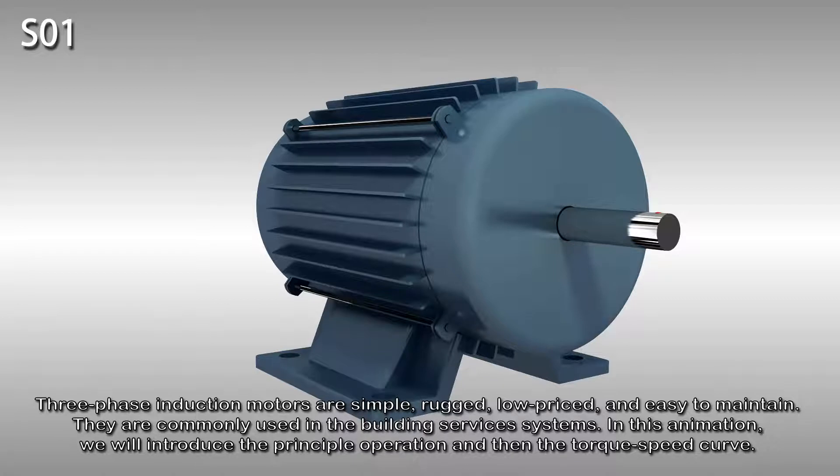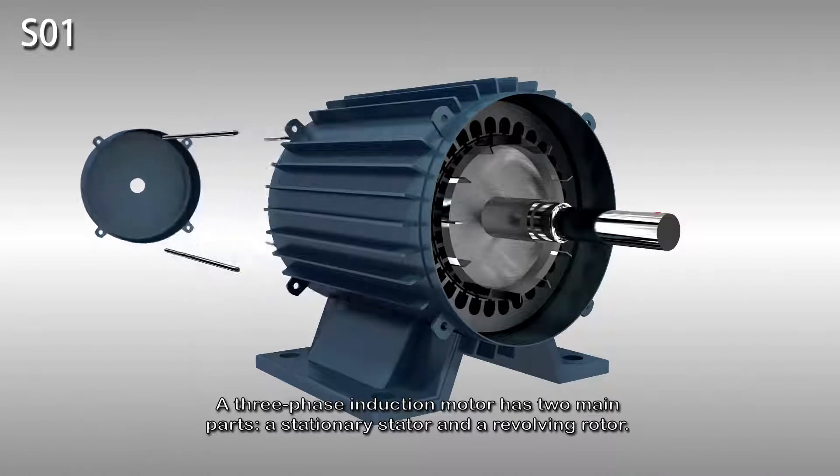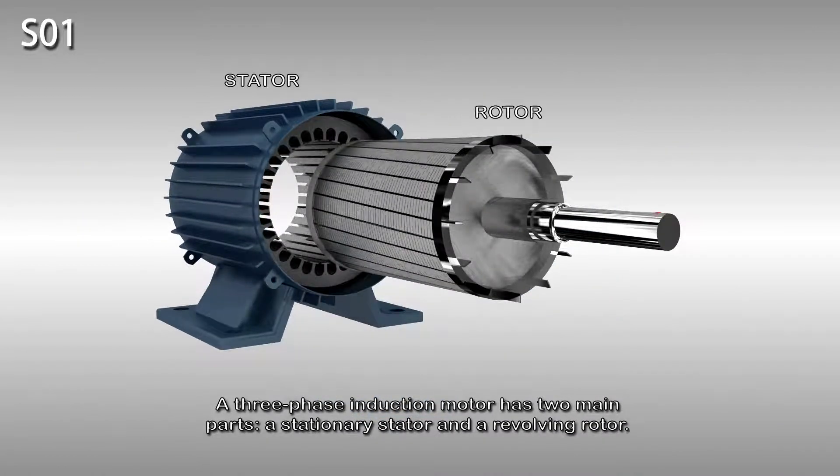In this animation we will introduce the principle of operation and then the torque speed curve. A three-phase induction motor has two main parts: a stationary stator and a revolving rotor.